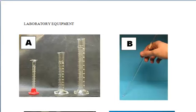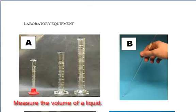Our first piece of equipment is labeled letter A. Those are graduated cylinders and they come in different sizes depending on how much liquid you want to hold. Graduated cylinders measure the volume of liquid and we use them all the time in the lab.